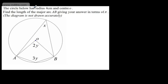In this question, we're told the circle below has radius 4 centimeters and center O. We're asked to find the length of the major arc AB, giving our answer in terms of π. We're told the diagram is not drawn accurately.